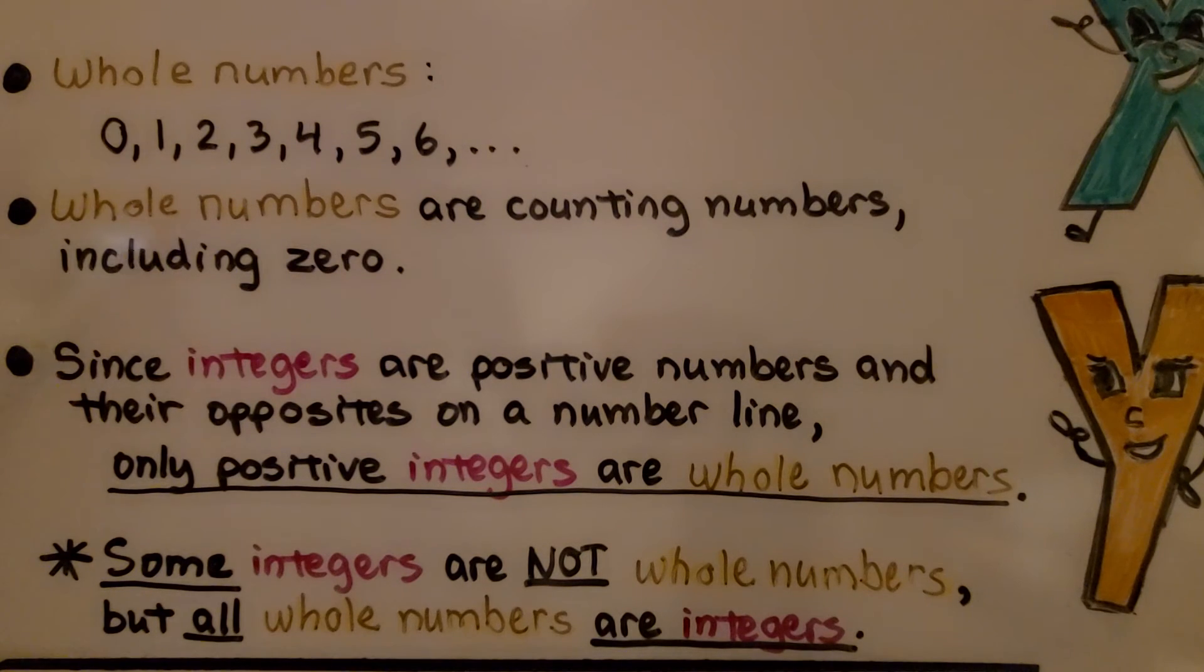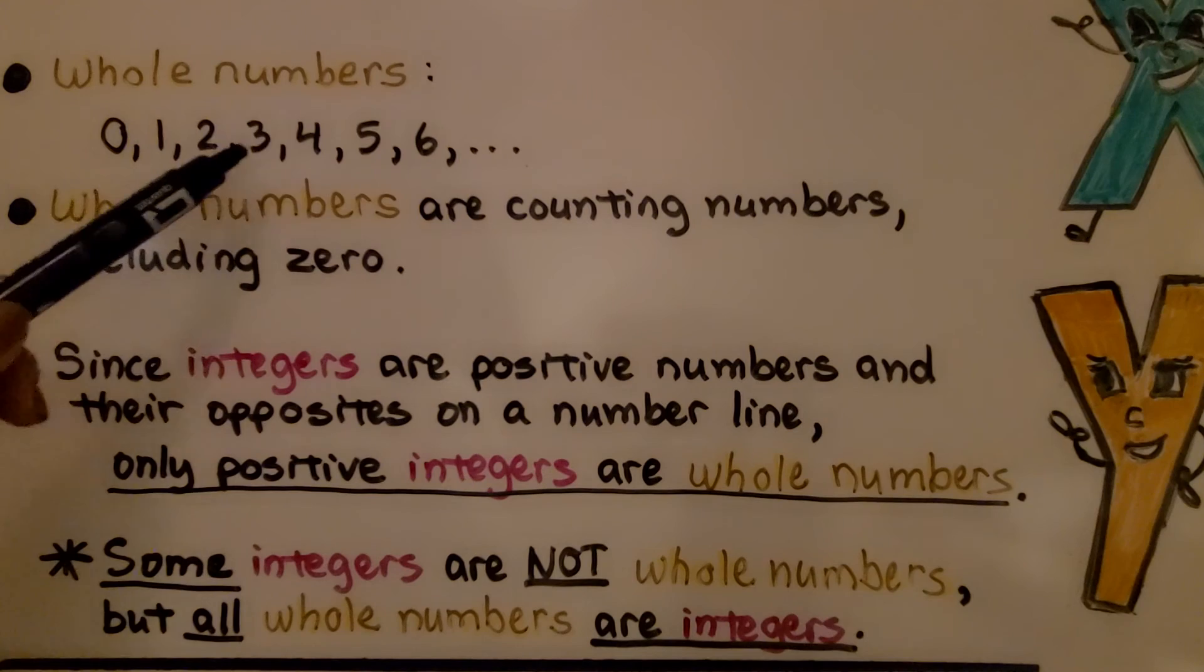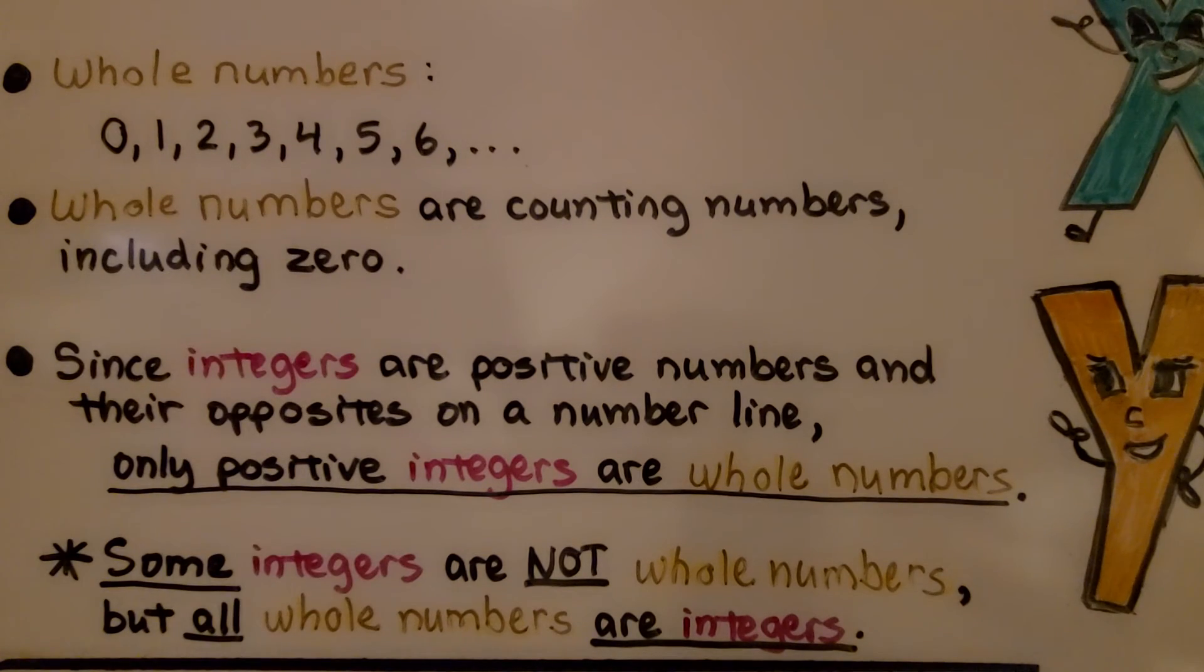Whole numbers are 0, 1, 2, 3, 4, 5, 6. They are counting numbers including 0. Since integers are positive numbers and their opposites on a number line, only positive integers are whole numbers. Some integers are not whole numbers, but all whole numbers are integers.